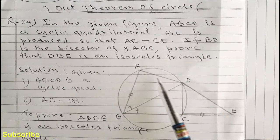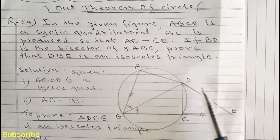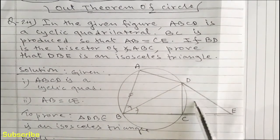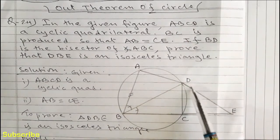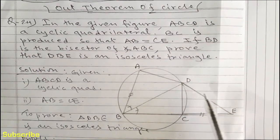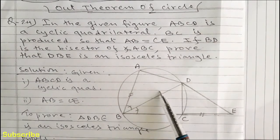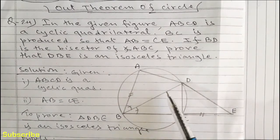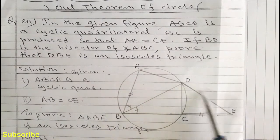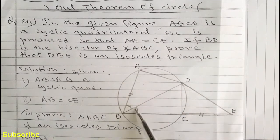After showing triangle ABD and triangle CDE congruent, we can easily write side BD is equal to side DE as corresponding sides of congruent triangles. Then, if any two sides of a triangle are equal, the triangle is an isosceles triangle. So our aim is to show BD is equal to DE by showing two triangles ABD and CDE congruent.